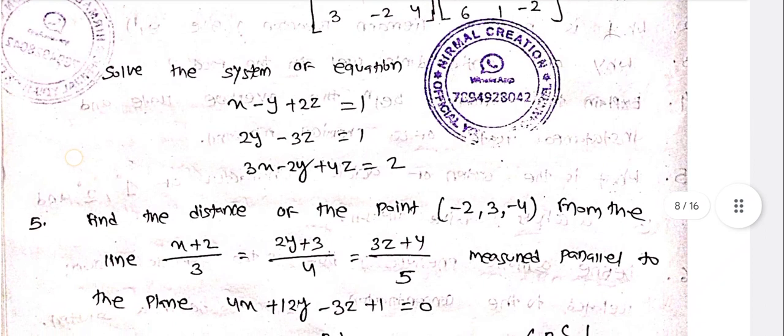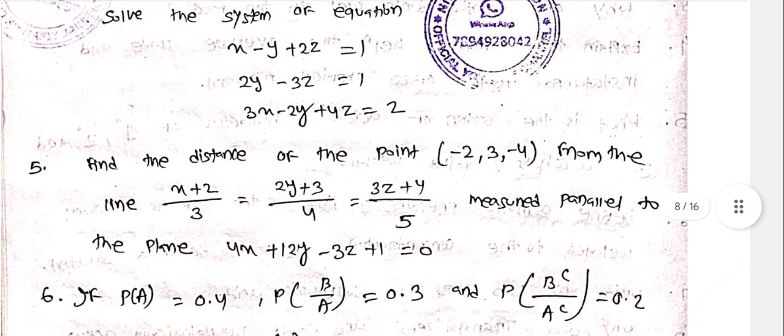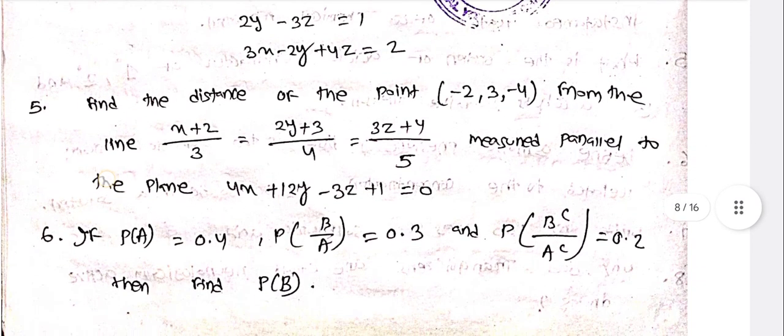Solve the system of equations: x - y + 2z = 1, 2y - 3z = 1, 3x - 2y + 4z = 2.